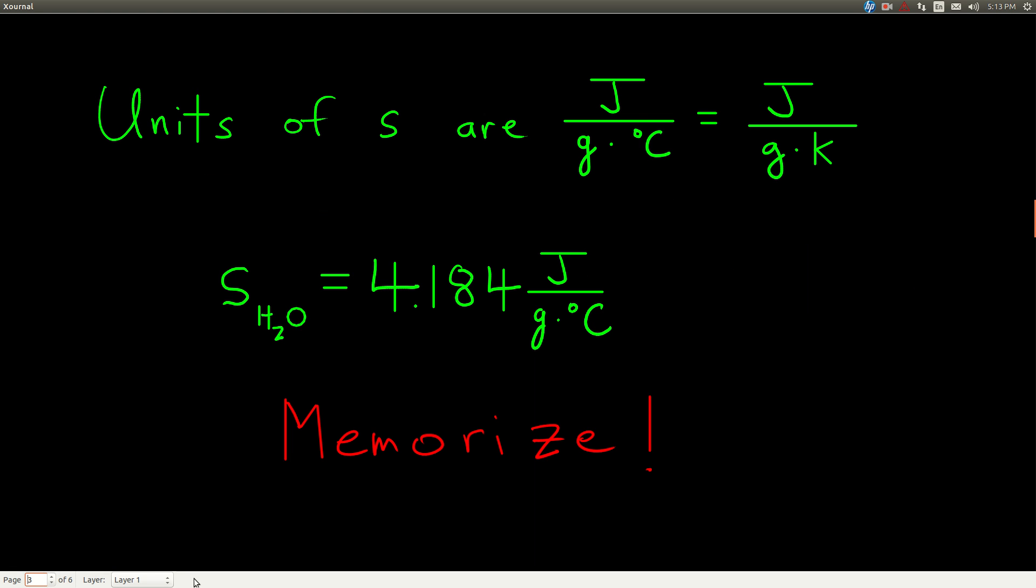The units of specific heat capacity are joules over grams times degrees Celsius or joules over grams Kelvin. These are the most common. You could have calories on top, but for the most part we'll use joules. It doesn't matter degrees Celsius or Kelvin. You do it the same way. There's no difference between these two.